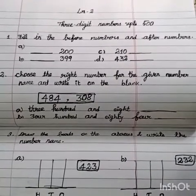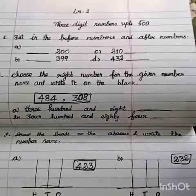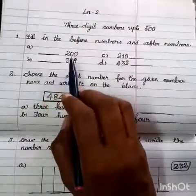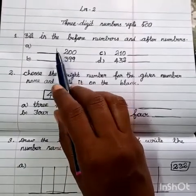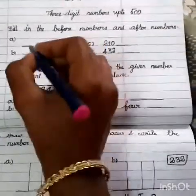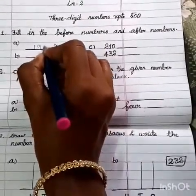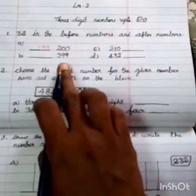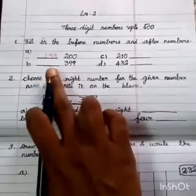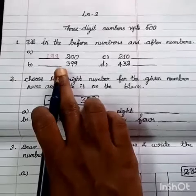First question, fill in the before numbers and after numbers. Question a, first enter 200. So, 199 is the before number. Question b, 399, so one before is 398.